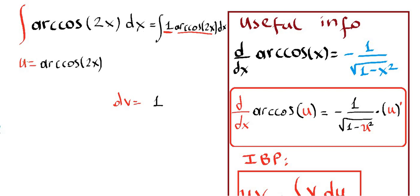Now we need to differentiate u and integrate dv. The antiderivative of 1 with respect to x is x. The derivative of cosine of 2x will be like the derivative of cosine of u: the derivative of cosine of u is negative 1 over the square root of 1 minus u squared, times the derivative of u, u prime, because of the chain rule.